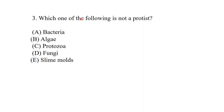Which one of the following is not a protist? There are five kingdoms of living organisms. All are included in kingdom Protista except bacteria, which have their own separate kingdom called the prokaryotic kingdom or kingdom Monera.